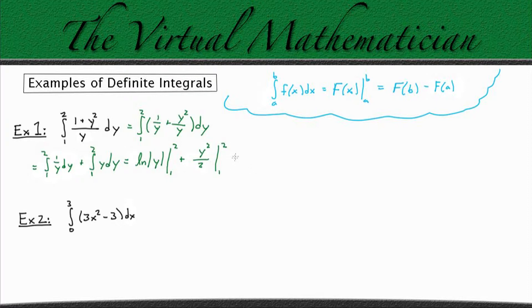Now we can rewrite this using the fundamental theorem of calculus. We're going to get the natural log of 2 minus the natural log of 1, and that's going to be the first integral, plus the second integral, which is 2 squared over 2 minus 1 squared over 2.